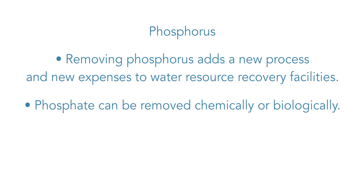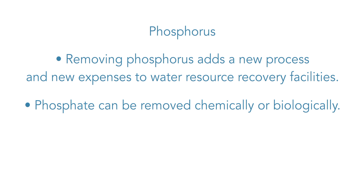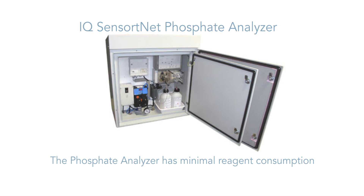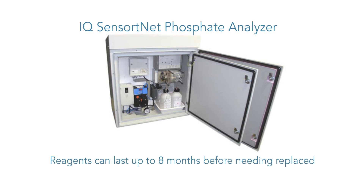Phosphorus can be removed chemically or biologically. Continuous online monitoring of phosphate with the IQ SensorNet phosphate analyzer lets the operator know when the required level of treatment has been reached, and chemical dosing can be reduced or stopped, minimizing operating expenses.